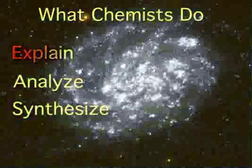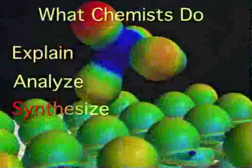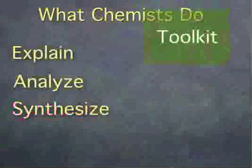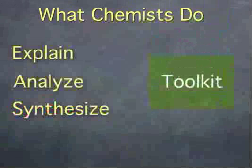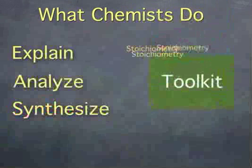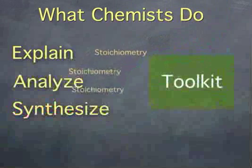In order to explain, analyze, and synthesize, chemists have developed a set of tools that support their goals. One of these tools is stoichiometry, the counting system of chemistry.